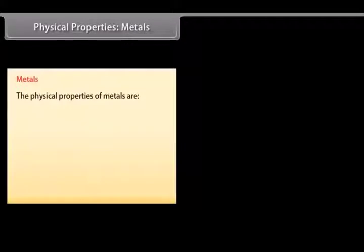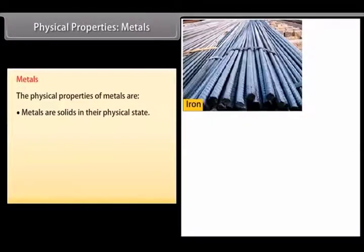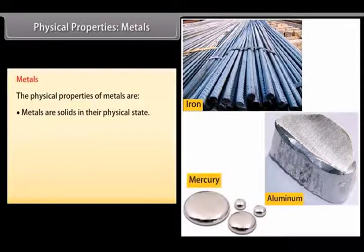The physical properties of metals are physical state. Metals are solid at room temperature. For example, iron, aluminium. Only mercury is liquid metal.